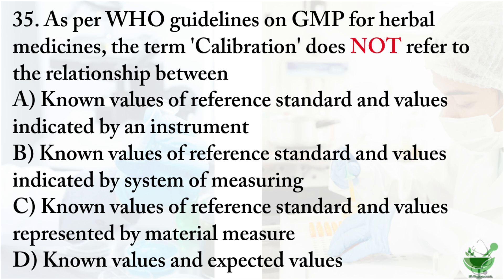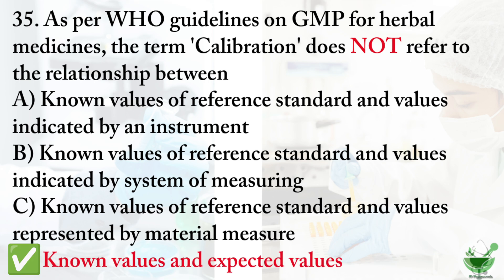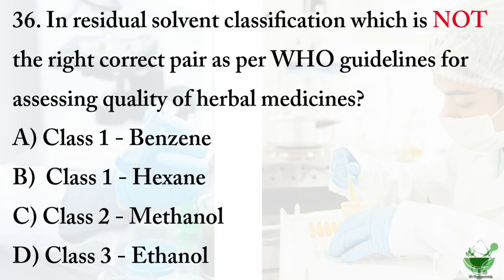Question 35: As per WHO guidelines on good manufacturing practice for herbal medicines, the term 'calibration' does not refer to the relationship between — option A: known values of reference standard and values indicated by an instrument, option B: known values of reference standard and values indicated by a system of measuring, option C: known values of reference standard and values represented by material measure, option D: known values and expected values. The correct option is D, known values and expected values.